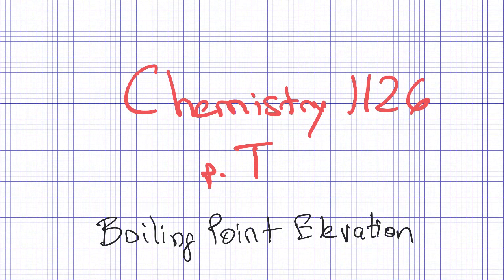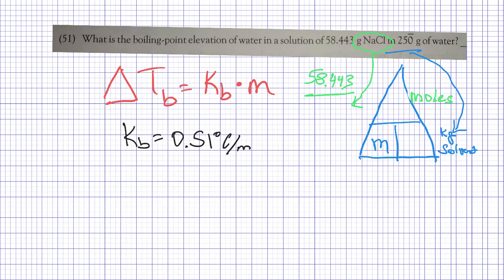Similar to freezing point depression is boiling point elevation. This will cover problems on page T of chemistry pace 1126. I wanted to point out that boiling point elevation and freezing point depression are called colligative properties. In other words, it doesn't matter what type of material it is.